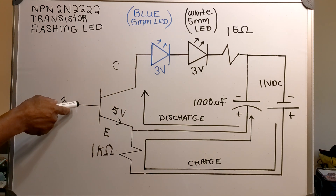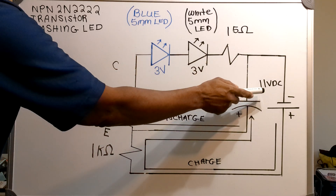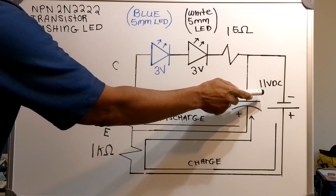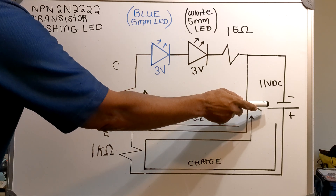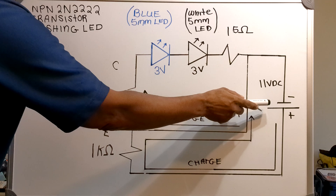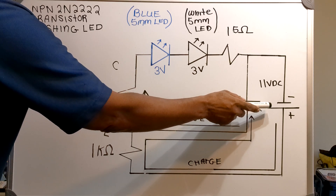The base terminal is not part of the circuit. The 11 volts DC is your minimum voltage, and if you go below 11 volts DC the circuit will not work.